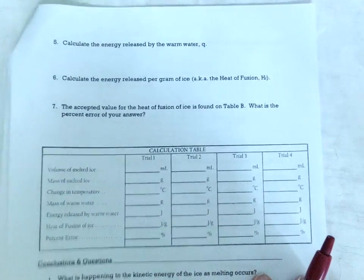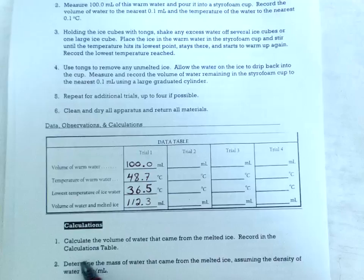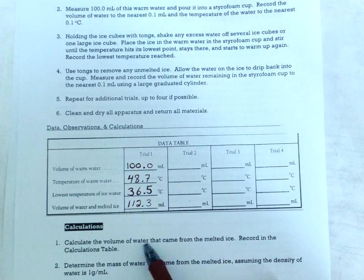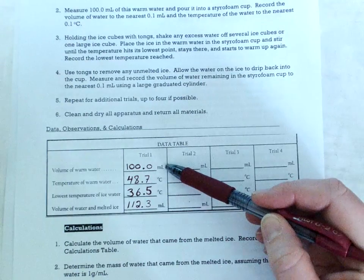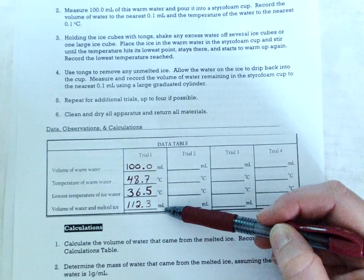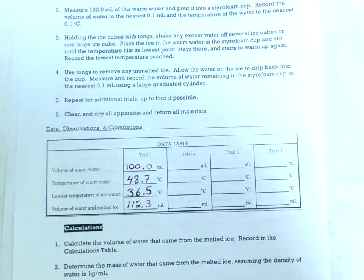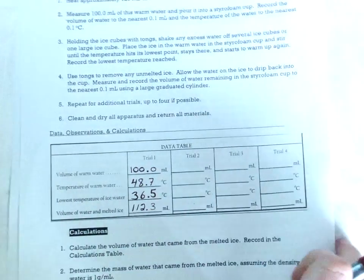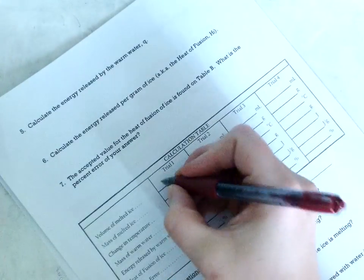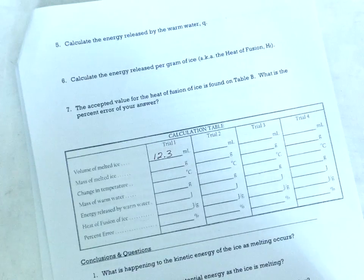You're going to do calculations for all four trials and keep track of your significant figures. Okay, so calculation one says calculate the volume of water that came from the melted ice. So clearly I started with 100 mils of warm water and then afterwards I have 112.3 so it's pretty obvious that I subtract these and that'll be what came from the melted ice. So 12.3 mils is what came from the melted ice.